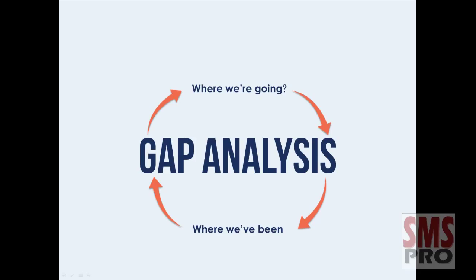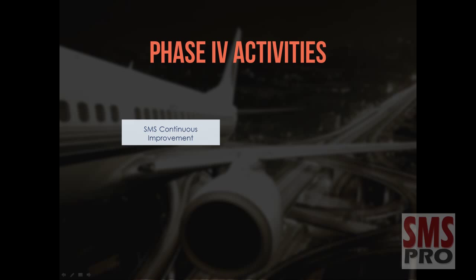For civil aviation regulatory authorities, safety assurance activities remain the ultimate means for demonstrating organizational regulatory compliance, ensuring that effective safety processes are properly implemented and continue to achieve their intended objectives. The following activities should be part of Phase 4 of your implementation: development of safety performance indicators, performance targets, and SMS continuous improvement. An indication of how your SMS is performing is necessary to understand its effectiveness.